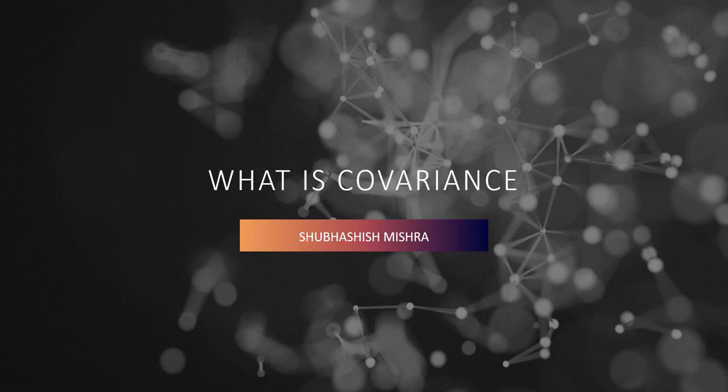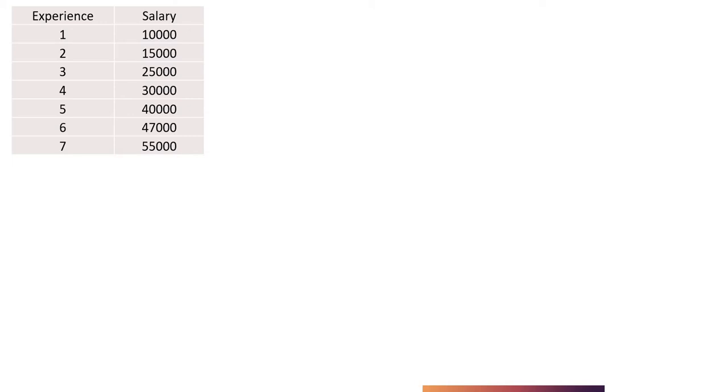So how will we be able to calculate covariance? Let's understand it with a practical example. Let's say we have a dataset which has an independent variable x as experience, and another dependent variable salary as y. In this dataset, based on the experience, the salary is provided. So with one year of experience the salary is 10,000, 2 years 15,000, 3 years 25,000, 4 years 30,000, and so on till 55,000.